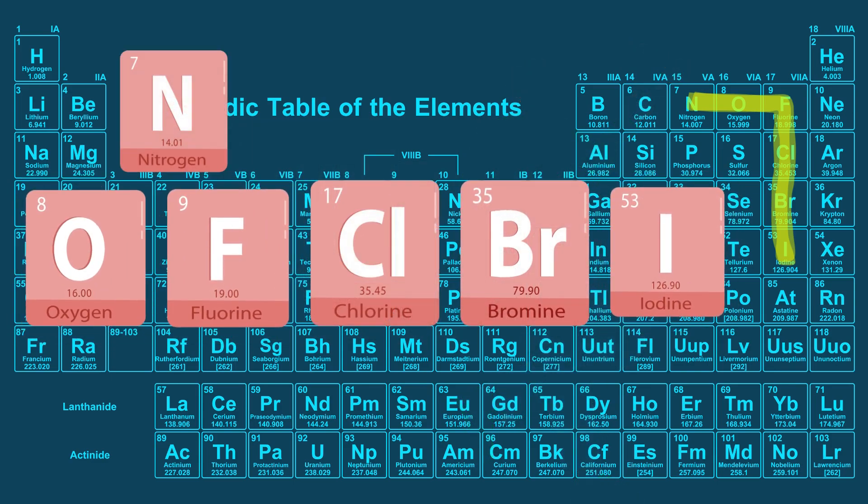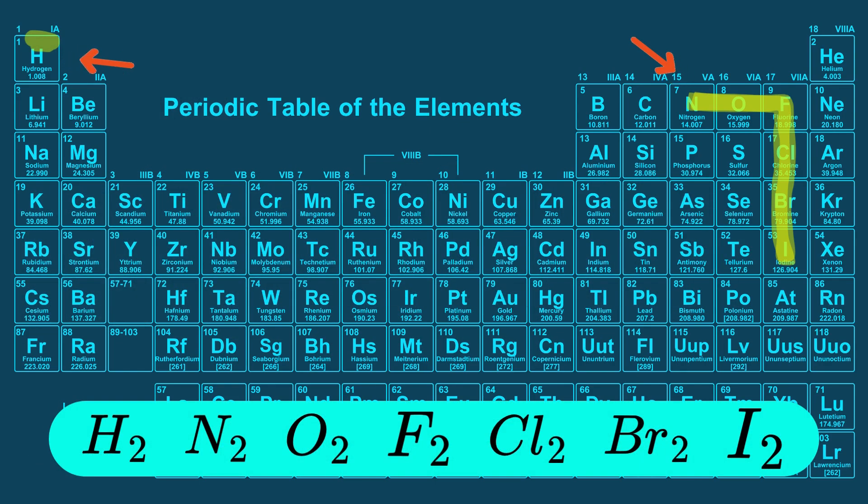Which are oxygen, fluorine, chlorine, bromine, and iodine. So that covers six of the diatomic elements. Now we include hydrogen to this list and there we have the seven diatomic elements.